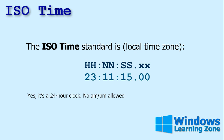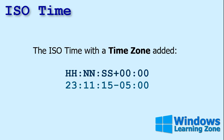Let me show you a little bit more about the time standard. If you want to add a time zone, you can go plus or minus however many hours before or after Greenwich Mean Time you are. For example, minus 5 right there would be New York in standard time.